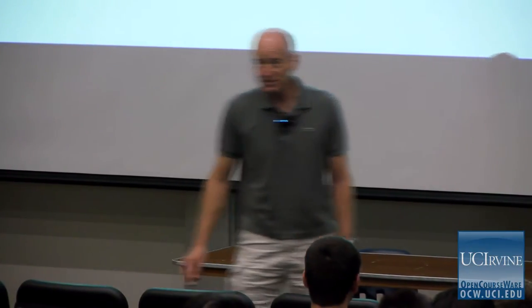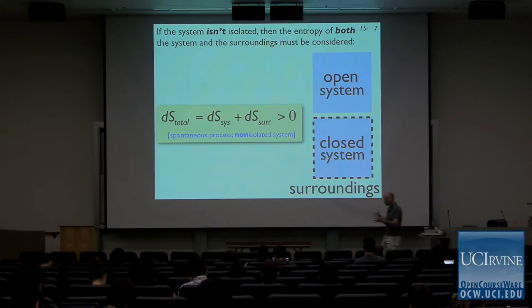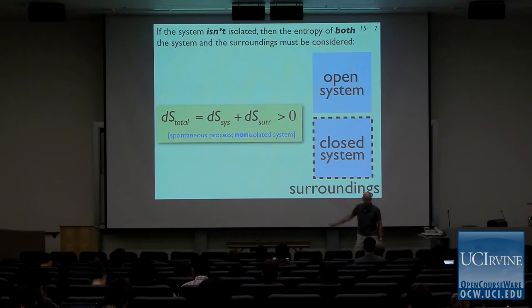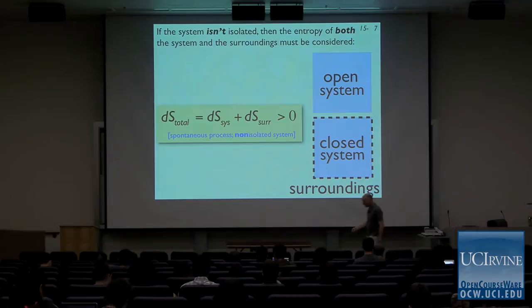But we don't have isolated systems in chemistry too often — they're almost always in communication with the environment. So we have to consider open and closed systems as well, and in those cases, because there is communication with the surroundings, it's the total entropy — surroundings plus system — that matters in terms of figuring out if a process is spontaneous. Notice that the focus is totally on entropy. We're not saying anything about the energy; we're only focusing attention on entropy.